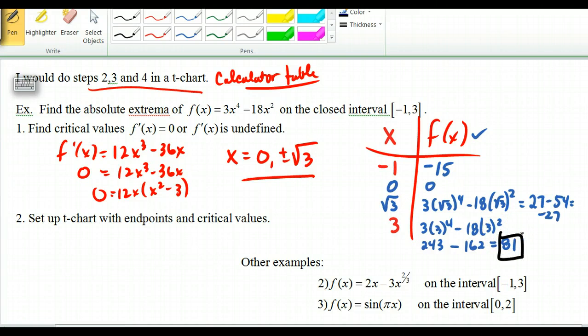So if I look at these values, this is my biggest y value. So this would be my absolute max. And then if I look at my absolute minimum, negative 27, negative 15, it looks like negative 27 is the winner. So this one would be my absolute min.